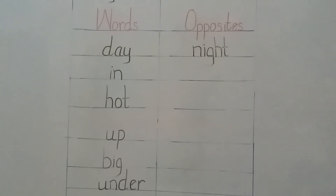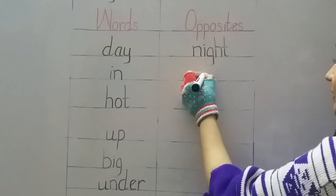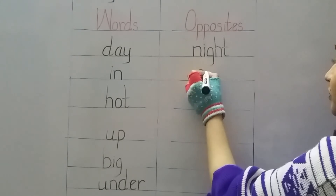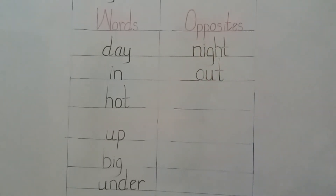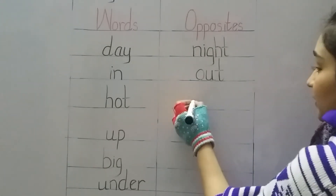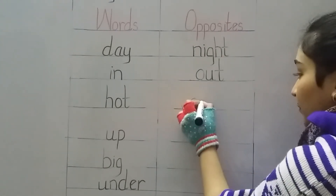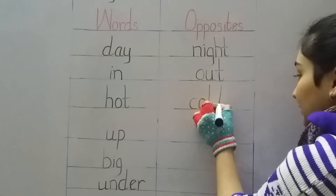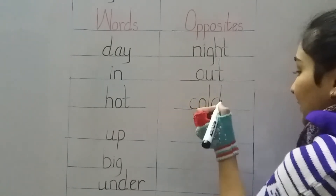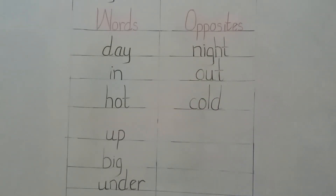Our next word is In. The opposite is Out. O-U-T, Out. And next is Hot — the opposite is Cold. C-O-L-D, Cold.